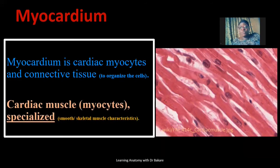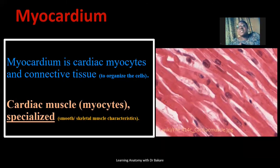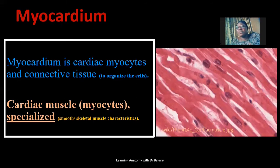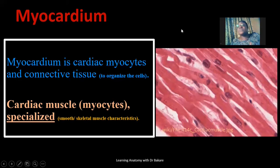Cardiac muscle has both skeletal and smooth muscle characteristics. It is an involuntary muscle because its action cannot be controlled — we cannot make the heart contract or relax on our own. It is striated like skeletal muscle, so it presents both smooth and skeletal muscle characteristics.